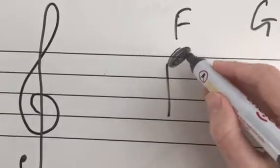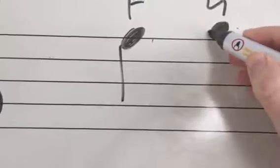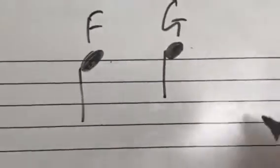If we want to go higher, we count forwards in the alphabet and we can have a G. Notice how I put the note in the line; I'm going to put it on top of the line now. That note's a G.